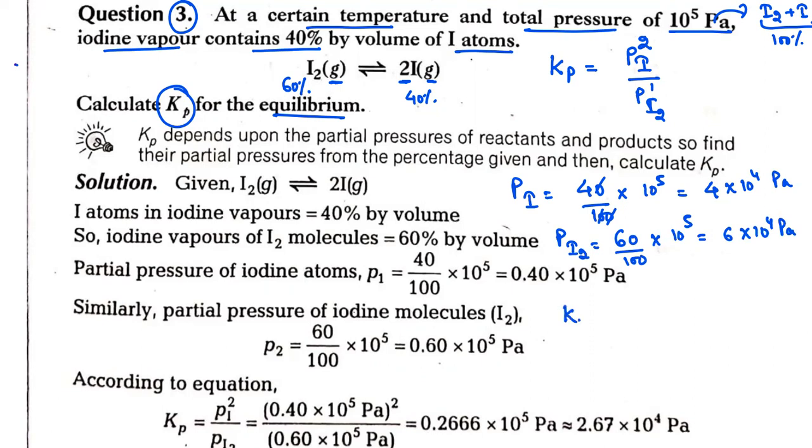Now we apply the formula. The pressure of iodine atoms, which is 4 times 10 to the power 4 pascals, raised to the power 2, divided by the pressure of iodine molecules, which is 6 times 10 to the power 4 pascals. When you solve this,